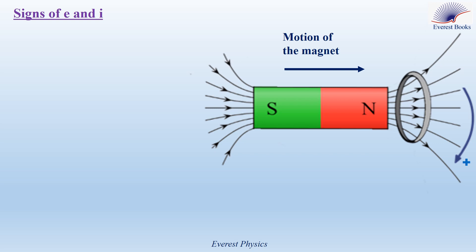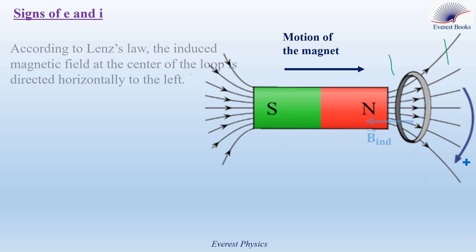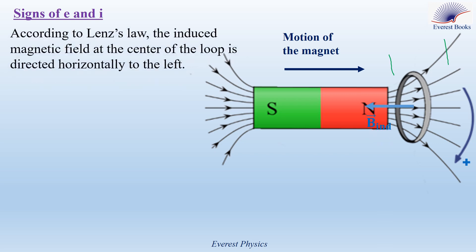The vertical conducting loop has two faces: the left face and the right face. During the motion of the north pole towards the conducting loop, the left face of the loop acts as a north face or north pole to repel the approaching north pole of the bar magnet, which means that the induced magnetic field at the center of the loop is directed horizontally to the left.